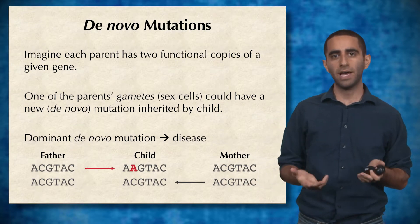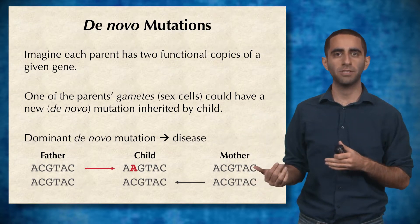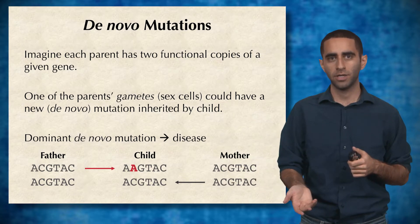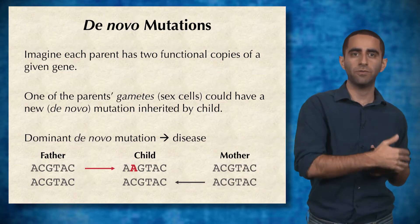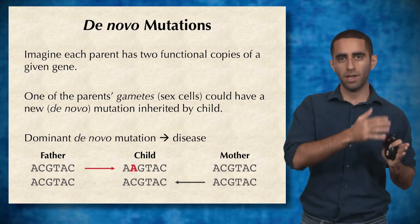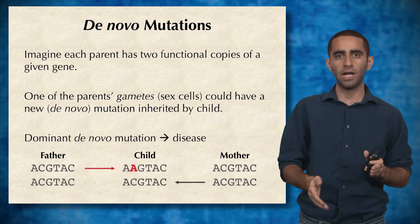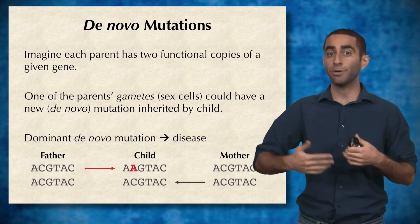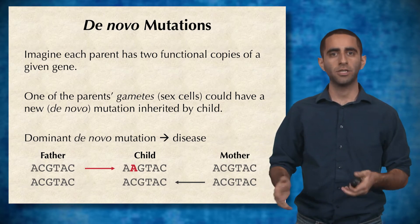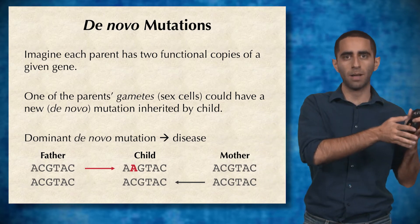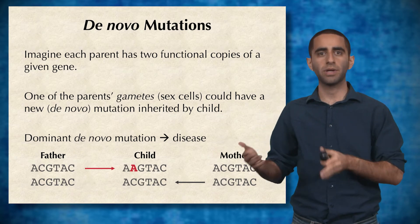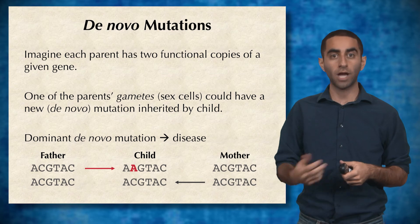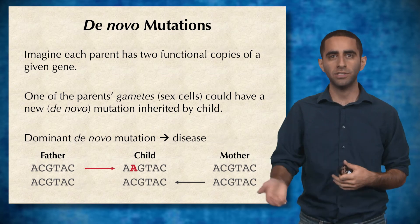So in this example, we have a mother who has two functional copies of this gene and passes down a functional copy to the child. But we have a father who also had two functional copies of the gene, but in the process of passing it down to the child, the gamete had a mutation at the second position that ended up breaking the gene. So now, even though the father had two functional copies, the child has one broken copy. So if this mutation is dominant, the child will have a disease.